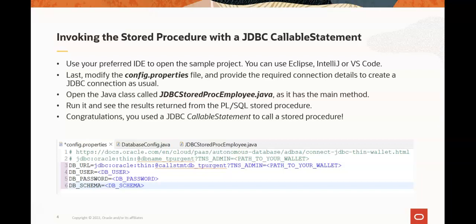Now we are ready to call a PLSQL stored procedure from a JDBC callable statement. You can use your preferred integrated development environment to open the project — Eclipse, IntelliJ, or VS Code with the Java extensions. Next, modify the config.properties file and provide the connection details to create a JDBC connection as usual. Then open the Java class called JDBCStoredProcEmployee.java, which has the main method. Run it and see the results returned from the PLSQL stored procedure.